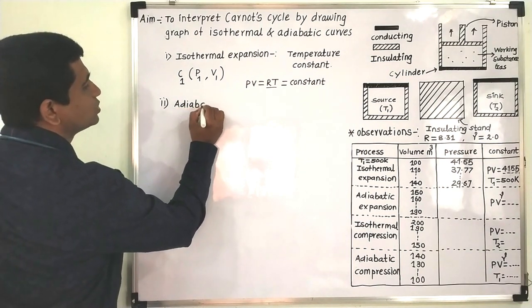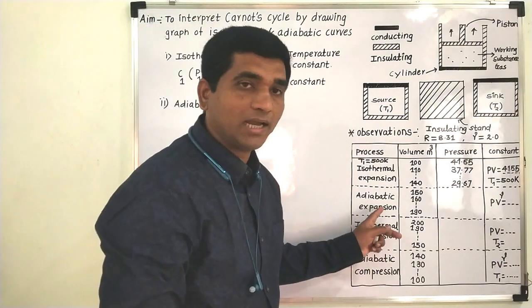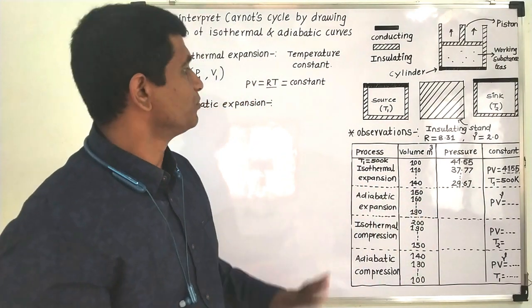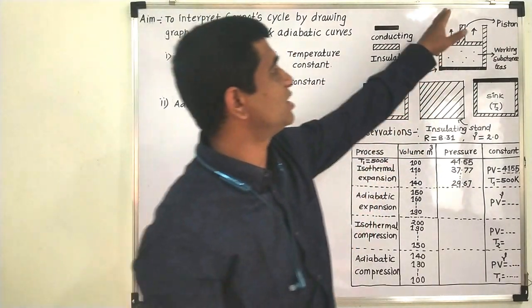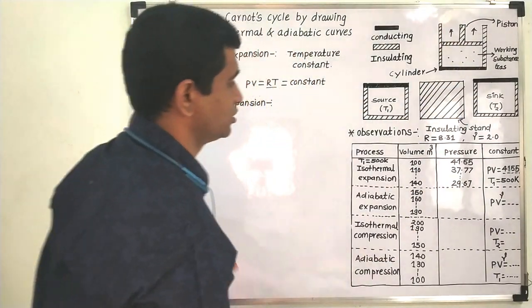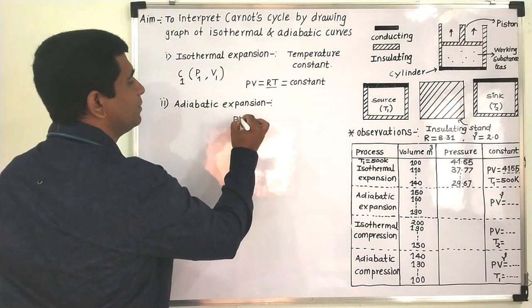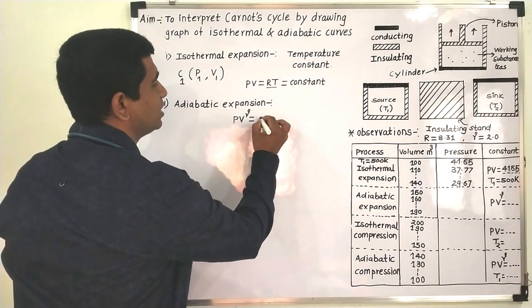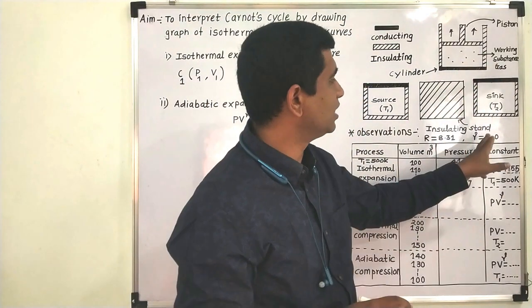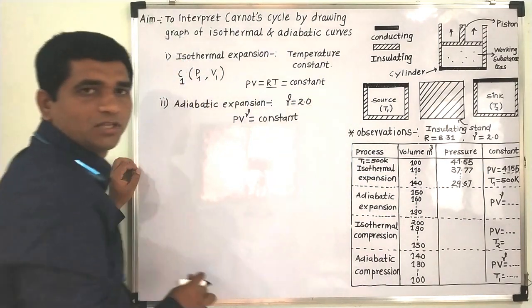For an adiabatic process, the relation between pressure and volume is PV^γ = constant, where γ is the molar specific heat ratio. For this experiment, we consider γ = 2. The four cycles proceed as: isothermal expansion (first), adiabatic expansion (second), isothermal compression (third), and adiabatic compression (fourth).